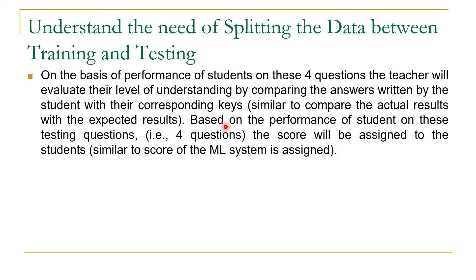We can apply the same concept in our machine learning model to evaluate its performance. Instead of giving the whole dataset to the machine learning model for training and then testing it on the same dataset, we will divide the dataset into two parts — one for training and another for testing. The machine learning model will be given training data to learn relationships, then build the model based on that data, and finally be tested on the test data. The model will make some predictions on the test data, and those predictions will be compared with the actual results to evaluate performance.